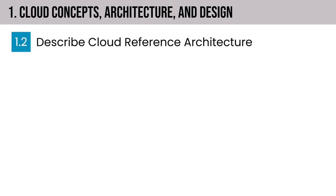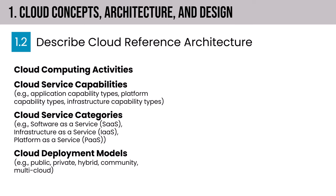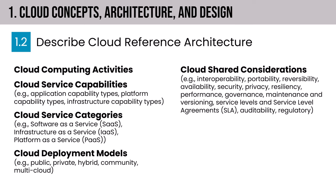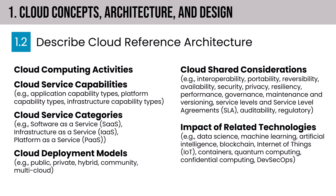That brings us to section 1.2: describe cloud reference architecture. We'll touch on cloud computing activities, cloud service capabilities, cloud service categories including IaaS, PaaS, and SaaS, cloud deployment models including public, private, hybrid, community, and multi-cloud, and shared considerations of cloud. I'll also slip in a quick discussion of the shared responsibility model, which will ease your onboarding of most of these concepts. Then we'll touch on the impact of related technologies, from data science and machine learning to containers, quantum, and DevSecOps.